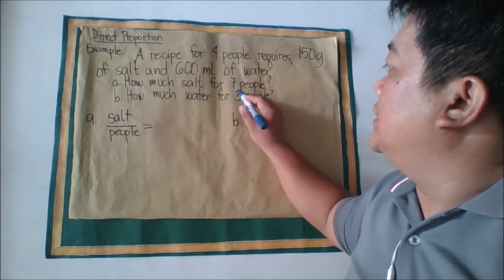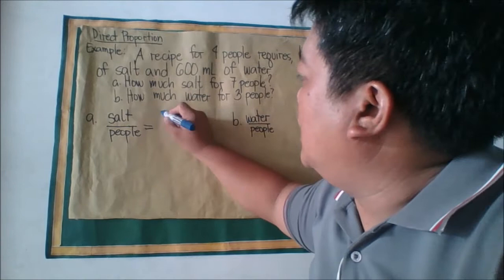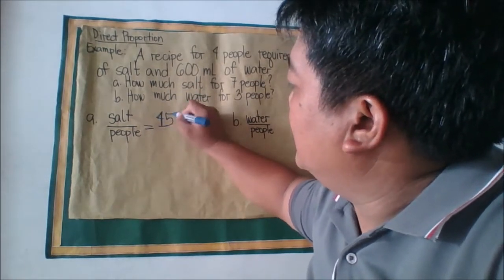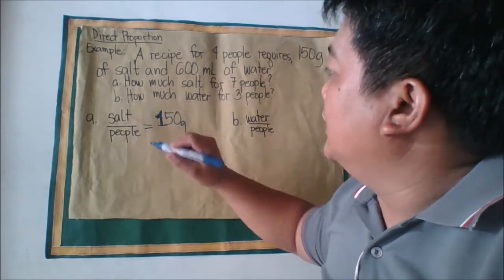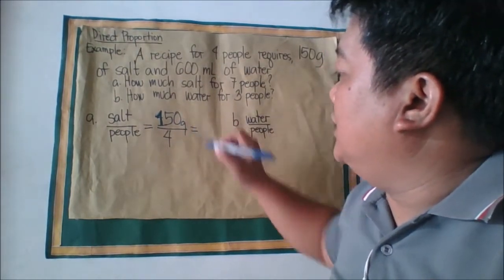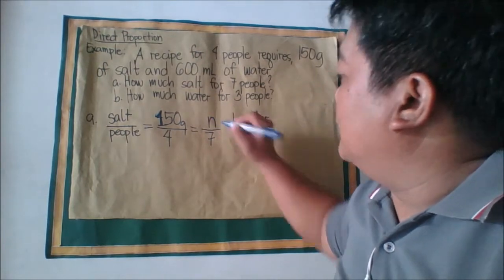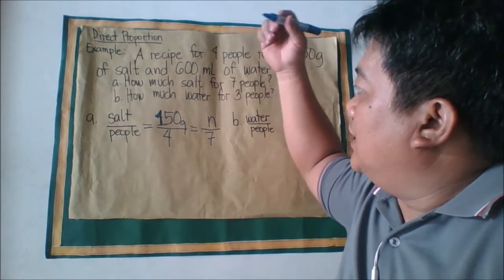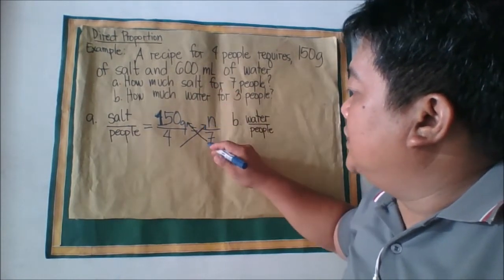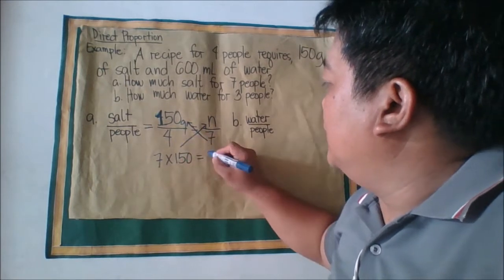We base our solution on this proportion: 150 grams of salt is to 4 people, which equals n grams of salt is to 7 people. To find the amount of salt, we will use cross multiplication: 7 times 150 equals 4 times n.